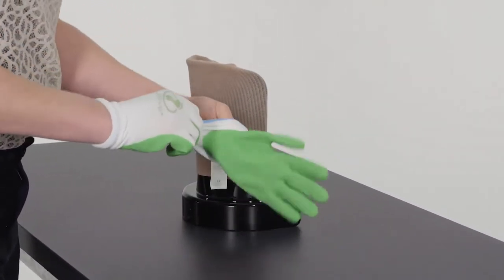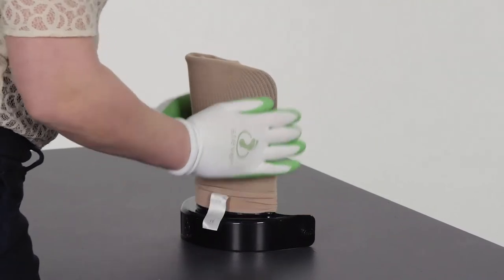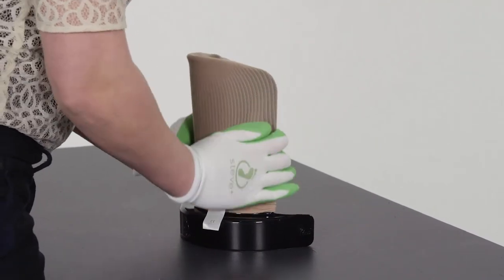Place your hands around the Steve Plus Easy On and roll the stocking all the way down until the toe of the stocking is at the top of the donning aid.